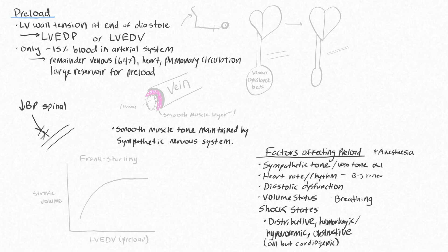The drop in blood pressure that you get with a spinal anesthetic is a very good example of decreased preload from venodilation. The tone of the veins is controlled by your sympathetic nerves, and if we block this with a spinal anesthetic, we change the diameter of our veins to be maximally dilated. Therefore your CVP goes down, blood return to your heart decreases, and you have less filling of your heart during diastole, so preload is worse. This drawing represents the resting tone of your venous capacitance beds being squeezed.